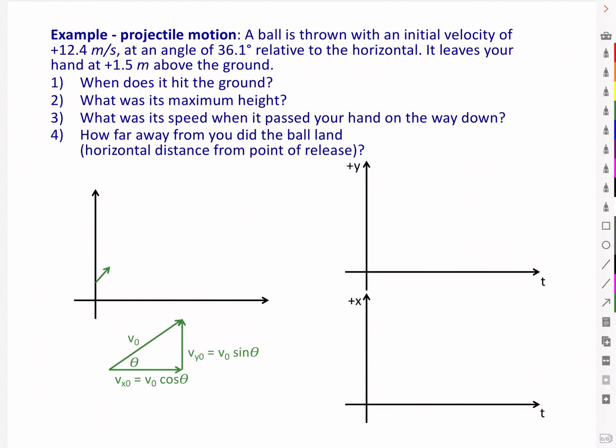Hello everyone. Here we have an example of projectile motion. A ball is thrown with an initial velocity of 12.4 meters per second at an angle of 36.1 degrees relative to the horizontal. It leaves your hand at positive 1.5 meters above the ground. When does it hit the ground? What was its maximum height? What was its speed when it passed your hand on the way down? And how far away from you did the ball land, i.e. the horizontal distance from the point of release.